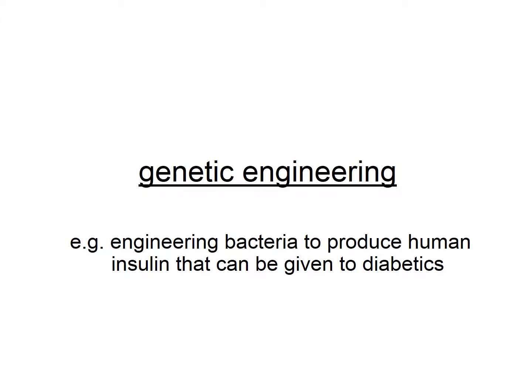There's an advantage to this, whereas previously diabetics would have to obtain their insulin from pigs. You don't get much insulin from one pig, some people object to taking pig insulin, and it doesn't quite work as well as human insulin would. So genetically engineering bacteria to produce human insulin solves all of those problems — plentiful supply, no moral or religious objections, and it works far better than pig insulin.